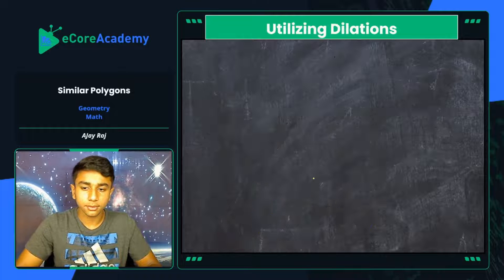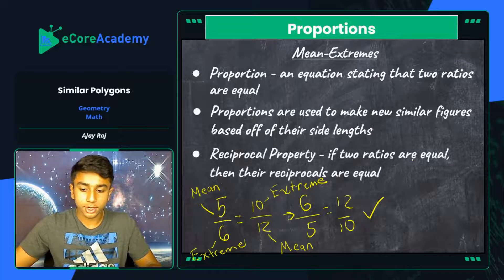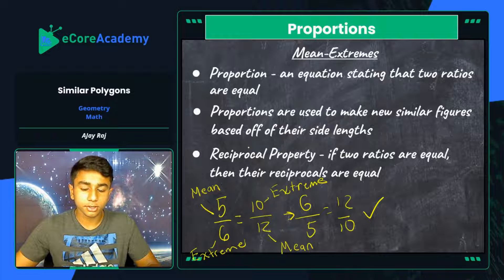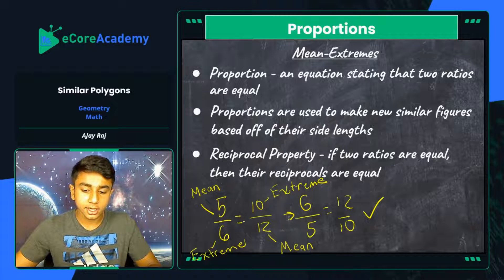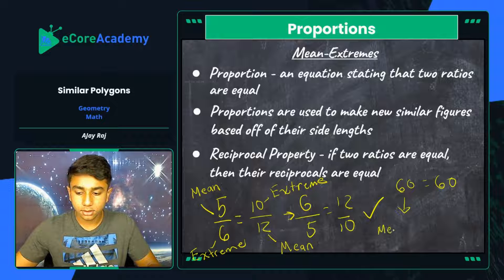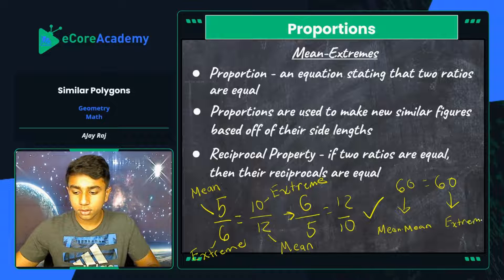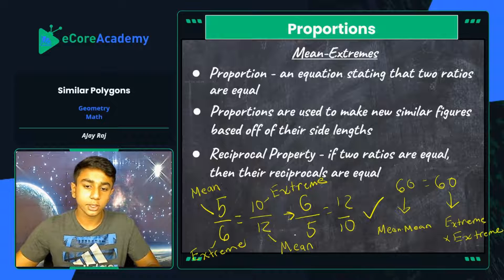Let me show you those relationships now. The reciprocal property is one property of the means-extremes, and another is cross multiplication. If you multiply the means together — 5 and 12 — and multiply the extremes — 6 and 10 — the products should be equal. So 5 times 12 is 60, and 6 times 10 is 60, giving us 60 equals 60. Cross multiplication will always make both sides equivalent if the proportion statement is true.